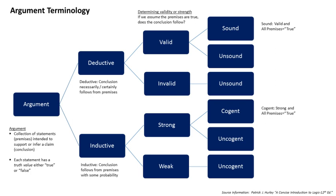In modern argumentation theories, arguments are regarded as defeasible passages from premises to a conclusion. Defeasibility means that when additional information, new evidence, or contrary arguments is provided, the premises may no longer lead to the conclusion (non-monotonic reasoning). This type of reasoning is referred to as defeasible reasoning. For instance, consider the famous Tweety example: Tweety is a bird; birds generally fly; therefore, Tweety probably flies. This argument is reasonable and the premises support the conclusion unless additional information indicating that the case is an exception comes in — if Tweety is a penguin, the inference is no longer justified by the premise.